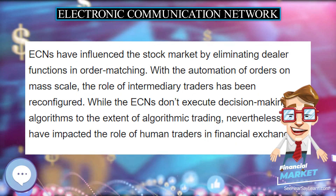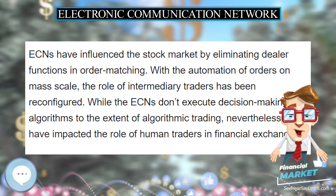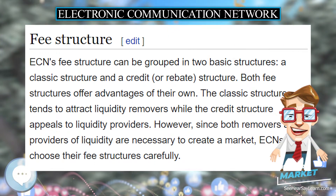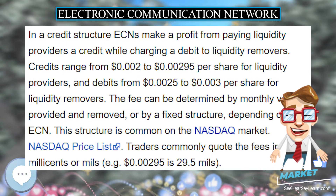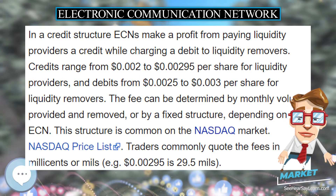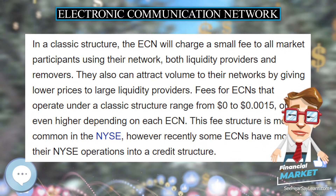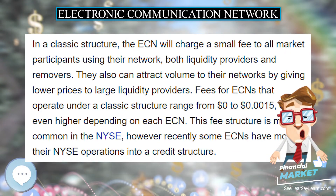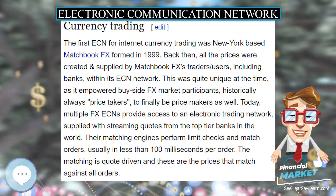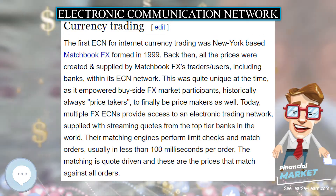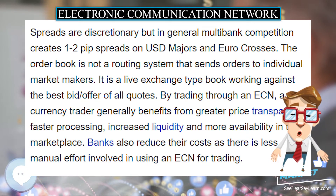To trade with an ECN, one must be a subscriber or have an account with a broker that provides direct access trading (DAT). ECN subscribers can enter orders into the ECN via a custom computer terminal or network protocols. The ECN will then match contra-side orders — i.e., a sell order is contra-side to a buy order with the same price and share count — for execution. The ECN will post unmatched orders on the system for other subscribers to view.